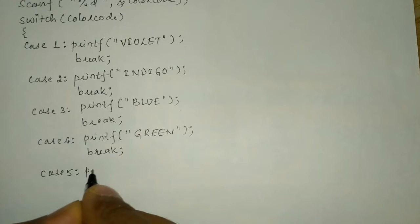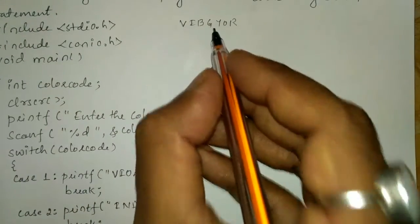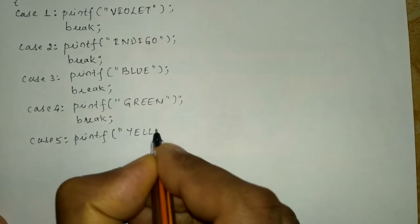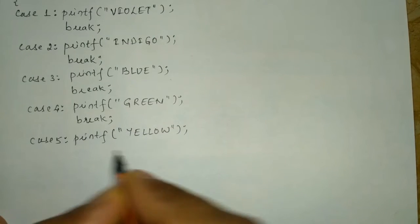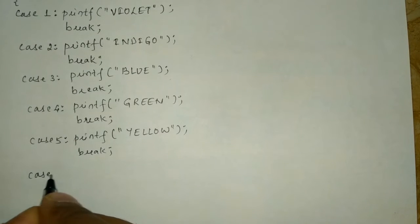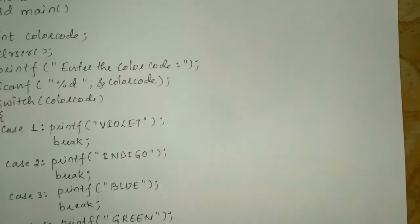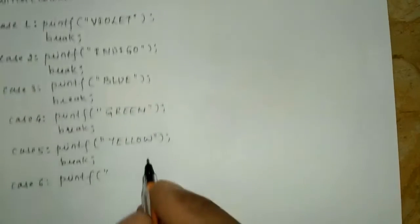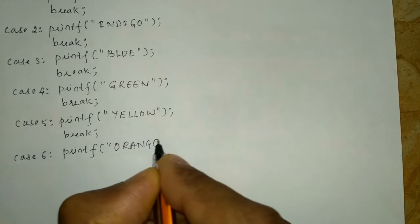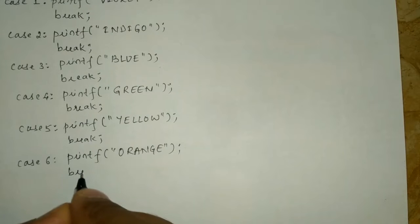Case number five — printf statement. After green we have yellow, so write 'yellow' in double quotation marks and use the break statement. Case six — printf statement. After yellow we have orange, so write 'orange', end the double quotation mark, then write the break statement.